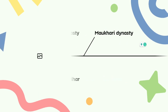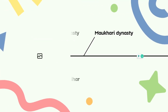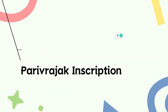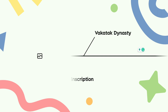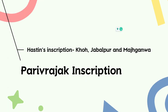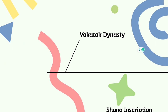Talking about the Parivarajaka dynasty, the most important inscription is the Hastina Shilalek, and this inscription is found at three locations: Khoh, Jabalpur, and Majhgawa. So at these three places you will find this inscription.